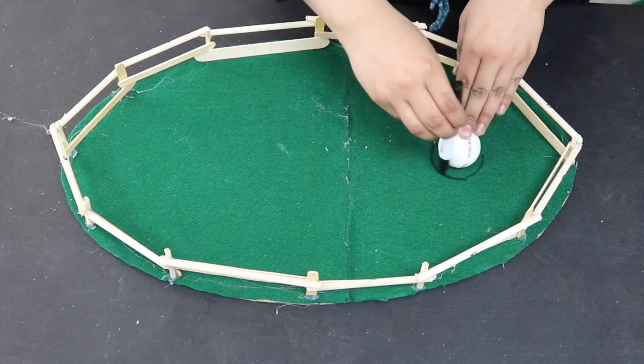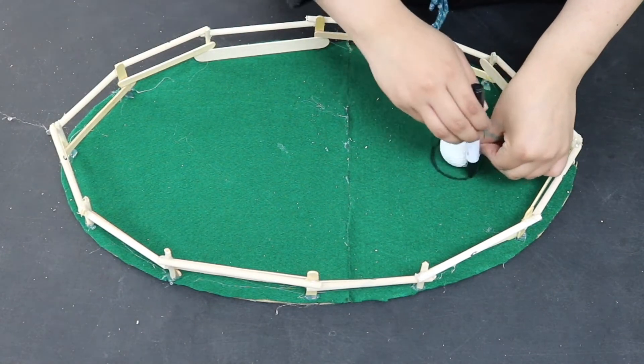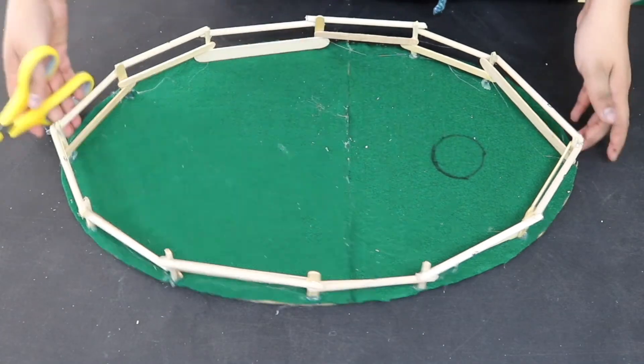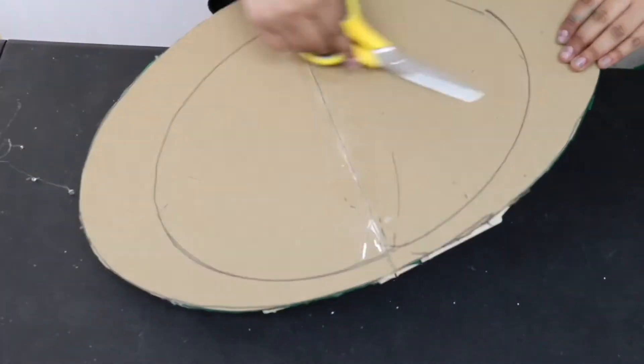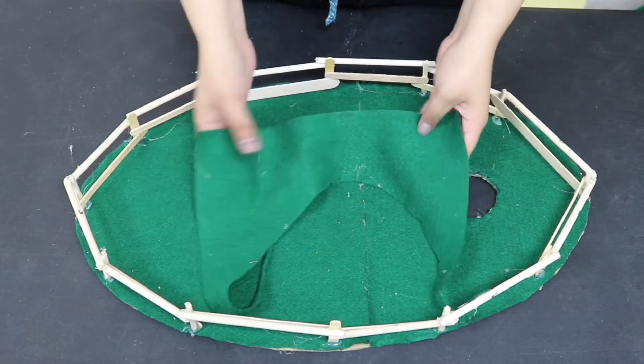Once the fence was done, I took the ball, traced a circle around it, made sure the circle was big enough for the ball, and then cut the circle out.